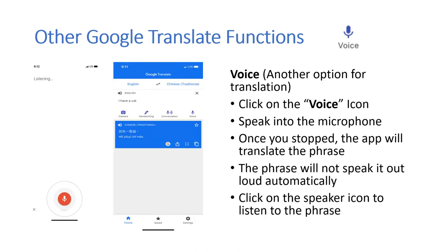Voice — another option for translation. Click on the voice icon and speak into the microphone. Once you stop, the app will translate the phrase. The phrase will not speak out loud automatically. Click the speaker icon to listen to the phrase.